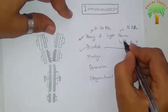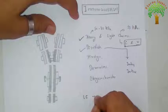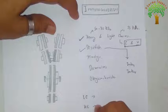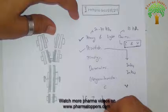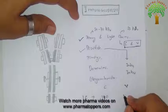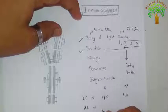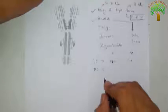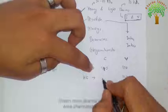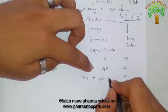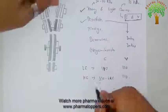Regarding the constant and variable regions: in case of light chains, both the constant and variable regions have approximately 110 amino acids each. In case of heavy chains, the variable region contains around 110 amino acids while the constant region may contain 332 to 440 amino acids.